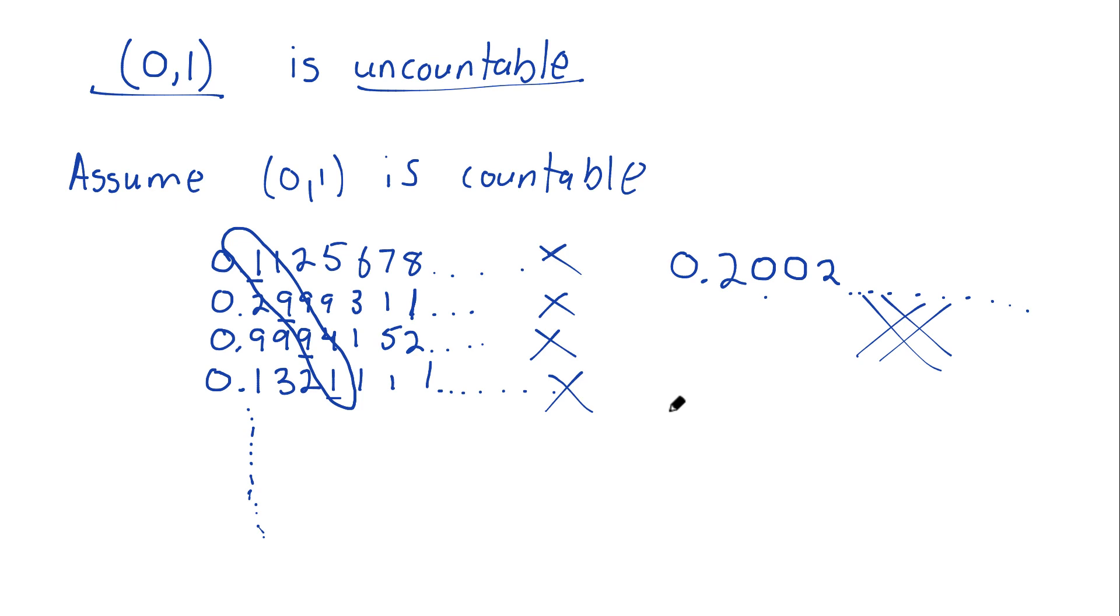And so, I didn't necessarily write the most perfect proof of this, but this is the general idea for a Cantor diagonalization. Very, very famous proof. I hope you enjoyed it. Now make sure to click the link on the screen to watch the next video in the real analysis course.